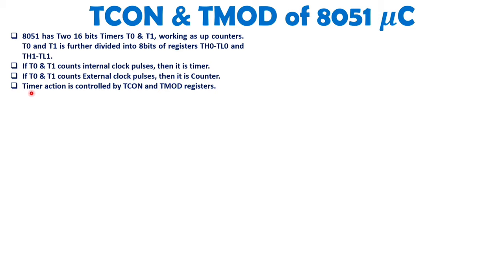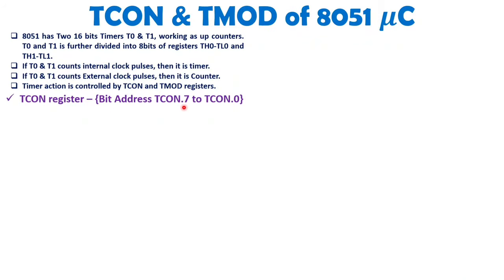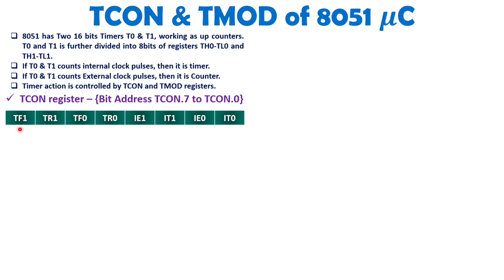To have timer action, you will have to configure the TCON and TMOD registers. The TCON register is a bit-addressable register, so you can address a single bit of the TCON register. For example, to address the 7th bit, write TCON.7, and to address the 0th bit, write TCON.0. This 8-bit TCON register holds data related to timer overflow as well as external interrupt.